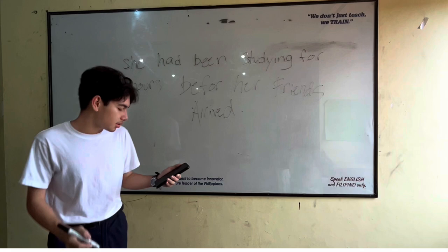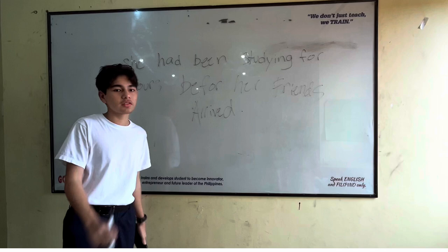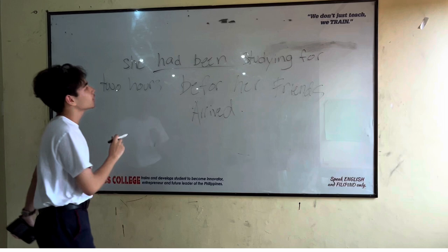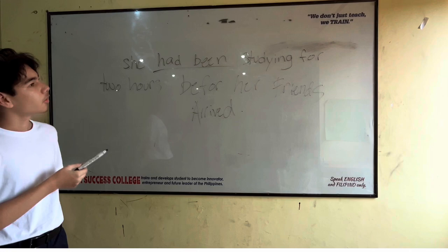These sentences are used to emphasize the duration of the action that occurred before another action. Using 'had been' with the present participle, which is the past perfect progressive tense, is a perfect example of this tense.